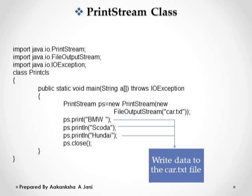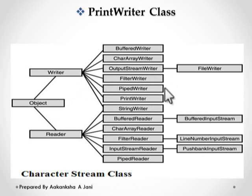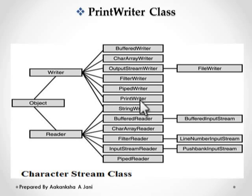Now let's see what is the character stream class. Streams which handle text data are known as character streams. Character streams read and write 16-bit data. These are the class hierarchy of character stream class. Writer and Reader are the character streams. The Writer class has methods to write data to some destination. PrintWriter class is a direct subclass of the Writer class. The object of PrintWriter class writes formatted strings to the destination, which could be either a byte stream or a character stream.